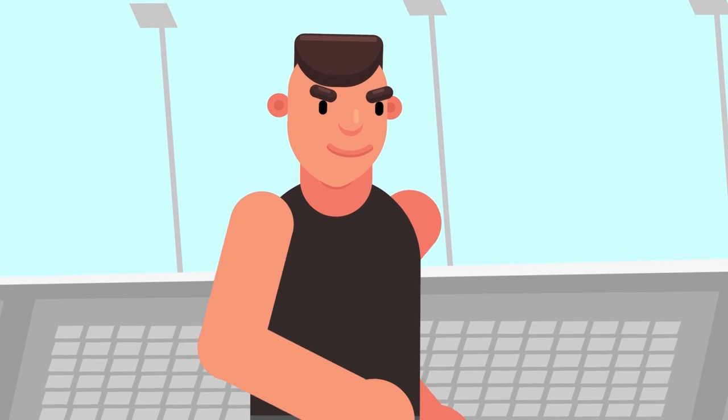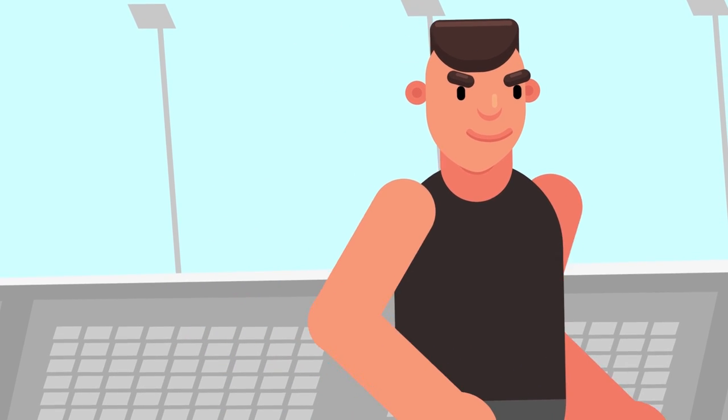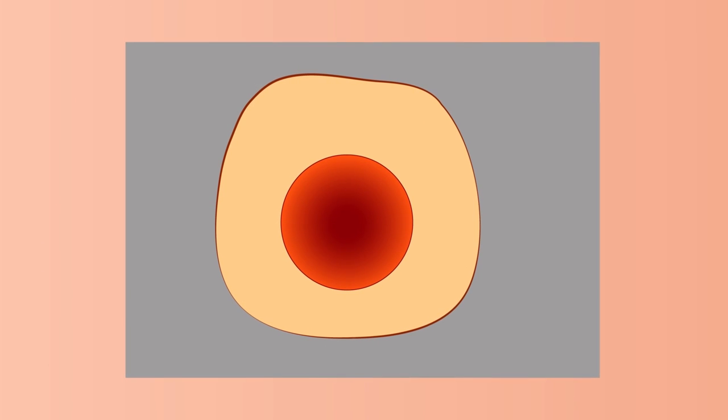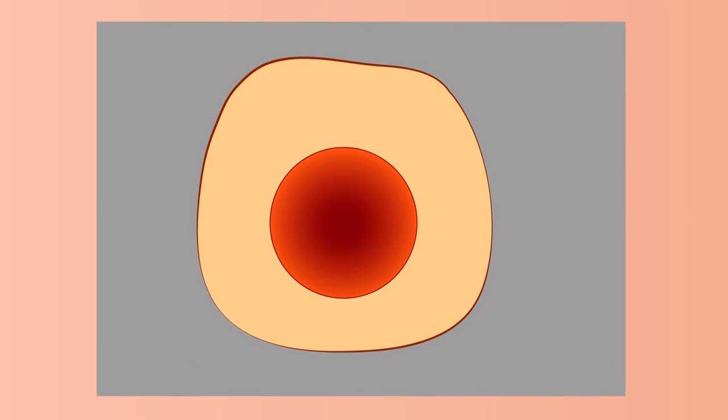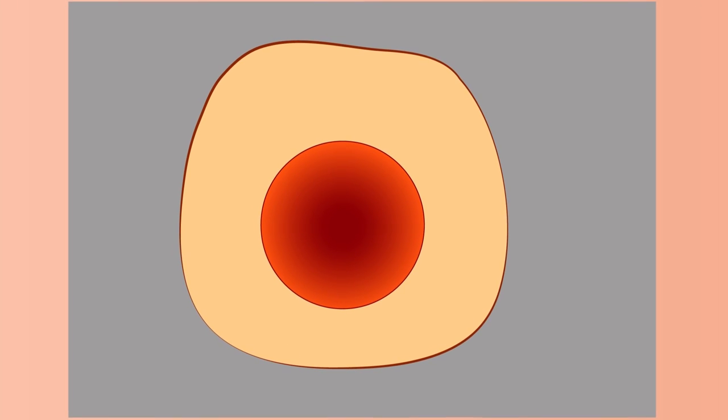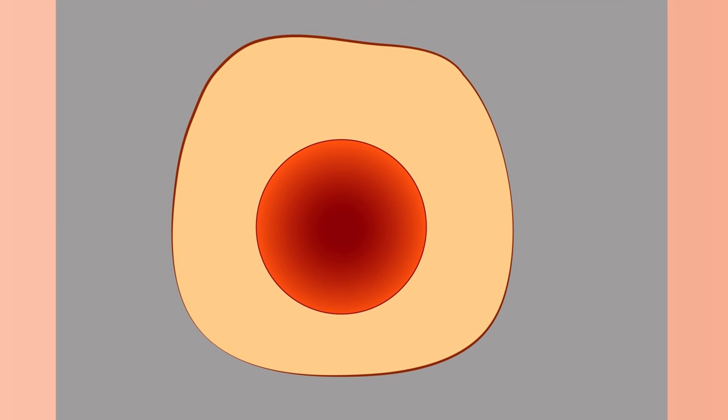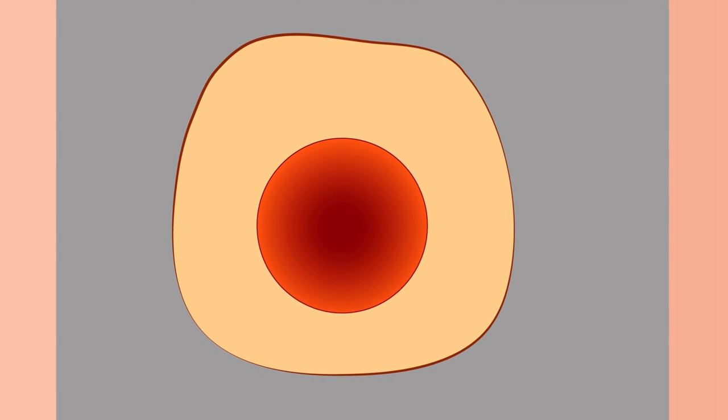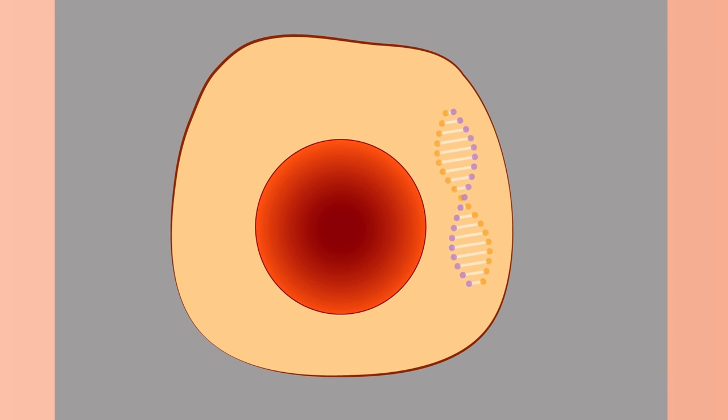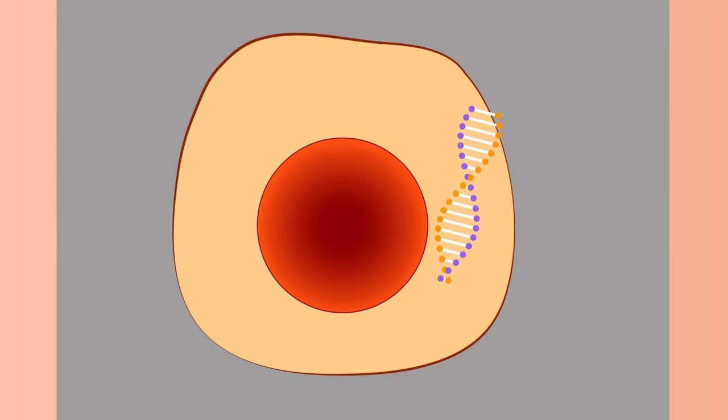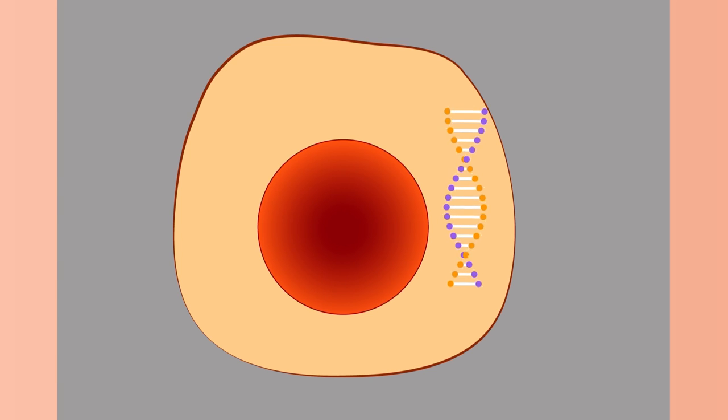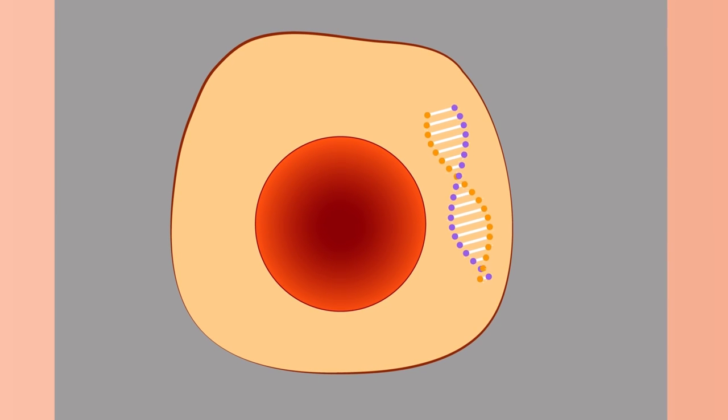Every cell in our body contains DNA. DNA is the genetic material that makes each of us who we are. Each time a cell divides, for growth or repair, its DNA needs to be copied. Enzymes help in this process by unwinding the DNA coils and copying the information.